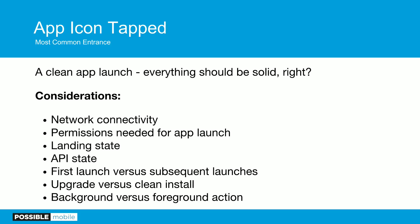First launch versus subsequent launches — did it work the first time, the tenth time? Stuff happens there. Upgrade versus clean install — you have no idea how many late nights we've had fixing issues from upgrade problems we just didn't think about, whether a data change or a new SDK. We want to make sure upgrades always work. There's also a huge difference in background versus foreground actions — are your ad calls being done on foreground and app launch, or just on foreground? These are requirements you need to talk about with your PMs, because these sometimes don't fire and we need to make sure they fire every time.